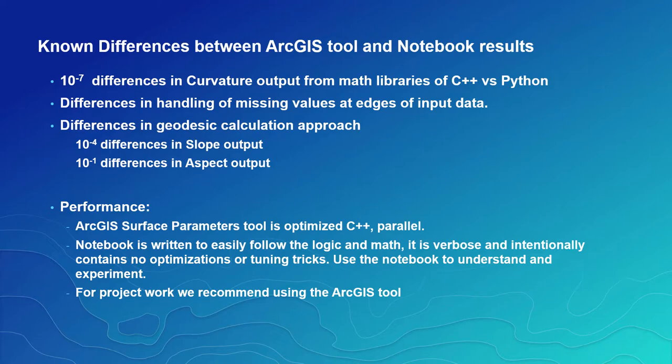There are a few known differences between ArcGIS and the notebook. There's a small difference in the curvatures due to the math libraries. We also have a different approach to handling missing values at the edges of the input data. And as mentioned previously, we had to take a different approach for the geodesic calculation using a point-by-point approach, which results in some larger differences for slope and aspect. The notebook's provided as an educational and research tool, and we wanted it to be very easy to understand the logic and formulas. So it intentionally lacks any optimizations or tuning. On the other hand, the ArcGIS geoprocessing tool is optimized parallel C++. The compute times are seconds versus minutes when comparing the two, so for applied projects, we recommend using the ArcGIS tool. As we add new terrain metrics into the ArcGIS tool or find other issues, we'll also continue to update the corresponding notebook here as well.